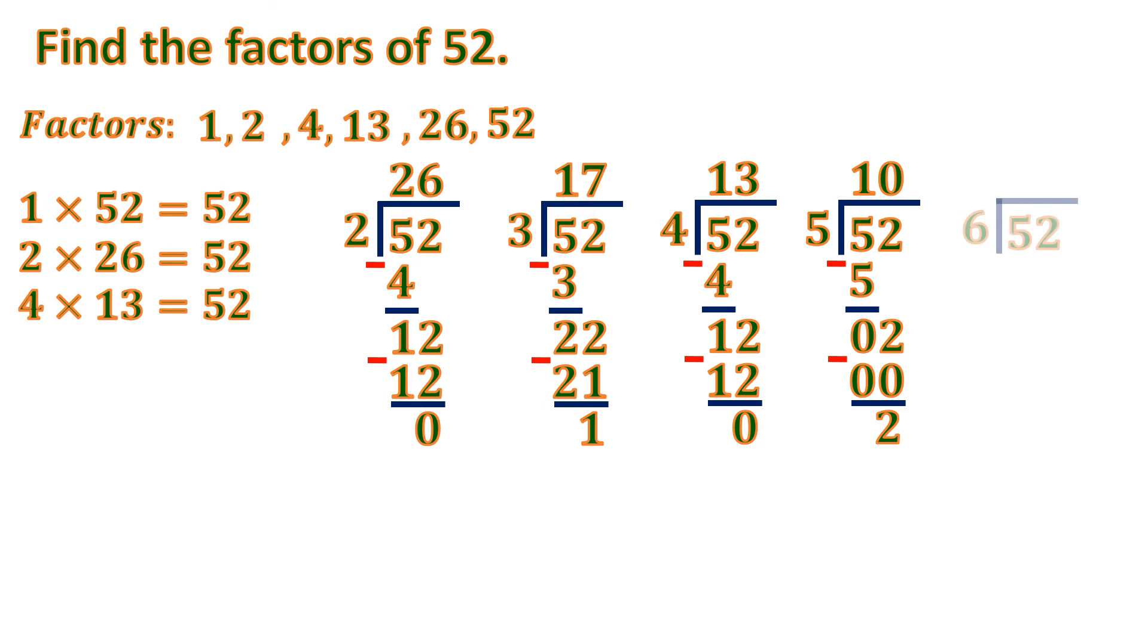Then let's continue. 52 divided by 6. So it will be 8, because 6 times 8 is 48. Then 52 minus 48 is 4. And there's nothing to bring down. So 6 is not a factor of 52, because it contains a remainder if we need to divide it.